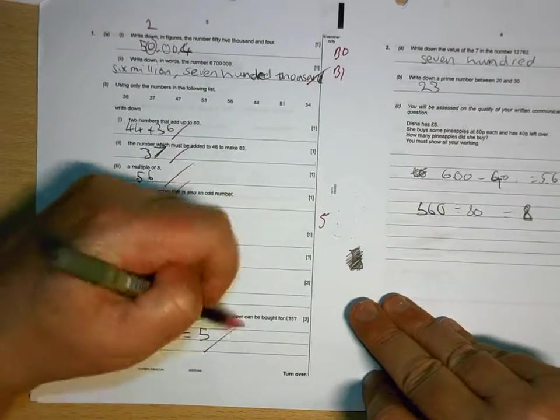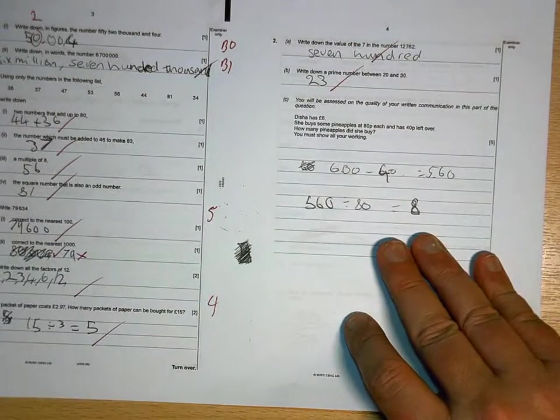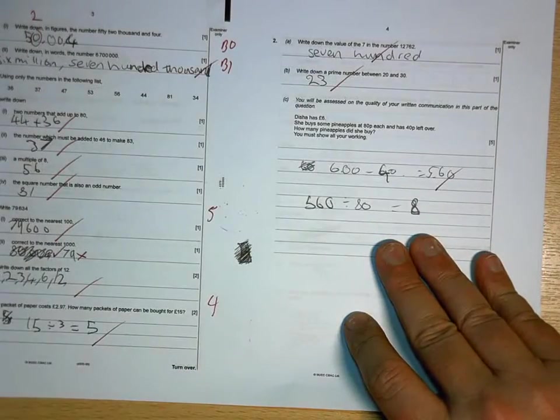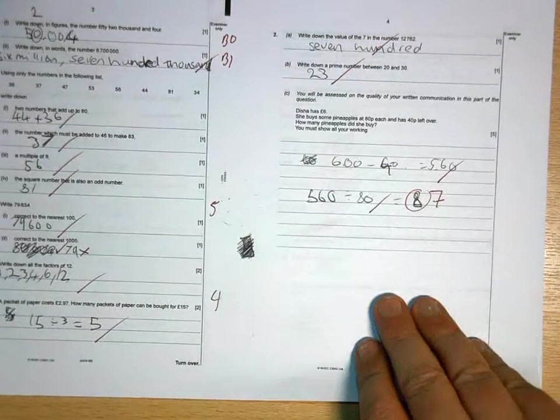That's correct, and that's correct. 723, 5.60, 5.60 divided by 87, 8, so 56.